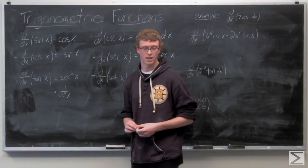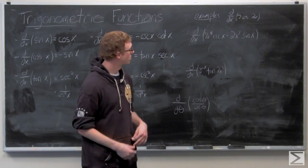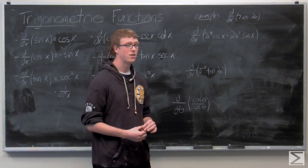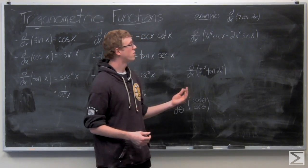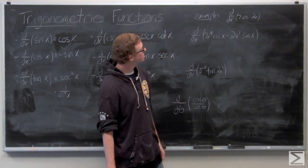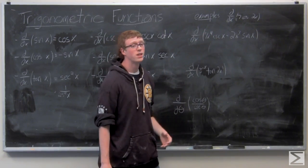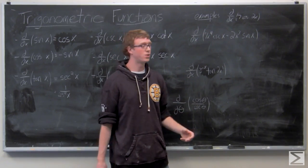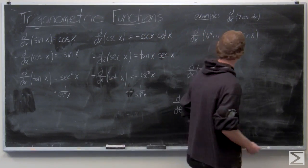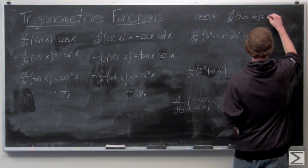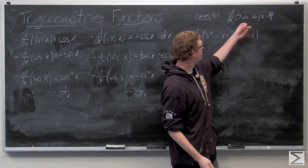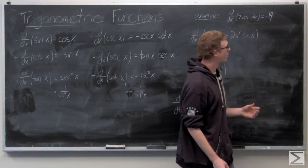Now let's look at some examples immediately. We're asked for the derivative of 7 cosine of 2X using the chain rule. We know we need to multiply out by 2, because g(X) is 2X. The 7 becomes negative 7 when cosine turns into negative sine. Multiplying 7 times 2 with the chain rule gives us negative 14 sine of 2X.